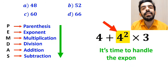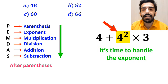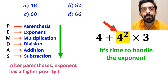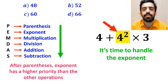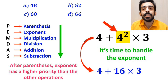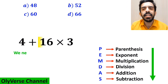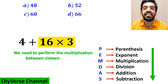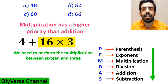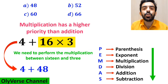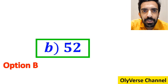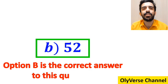Next, it's time to handle the exponent, because after parenthesis, exponents have higher priority than other operations. So we rewrite this as 4 plus 16 times 3. Finally, we perform the multiplication between 16 and 3, because multiplication has higher priority than addition. This simplifies to 4 plus 48, which gives us the answer 52. Therefore, option B is the correct answer.